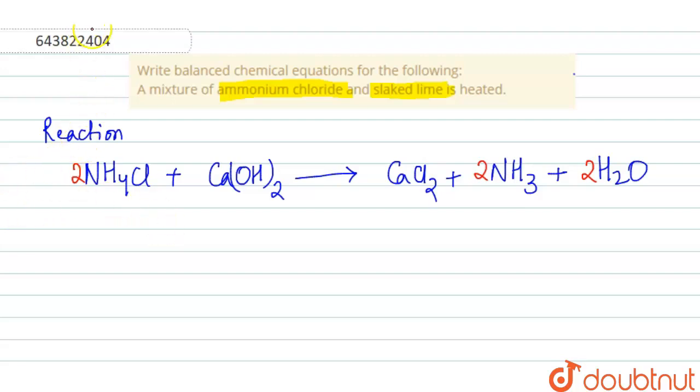Now complete equations are only done when you write the names of the reactants and products. So this is ammonium chloride, this is slaked lime.